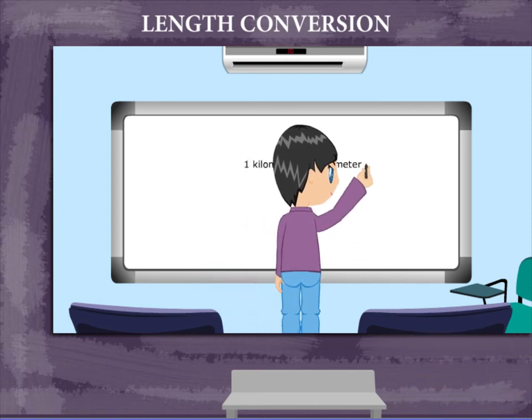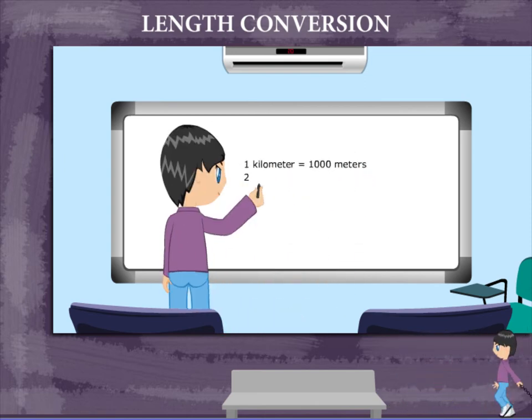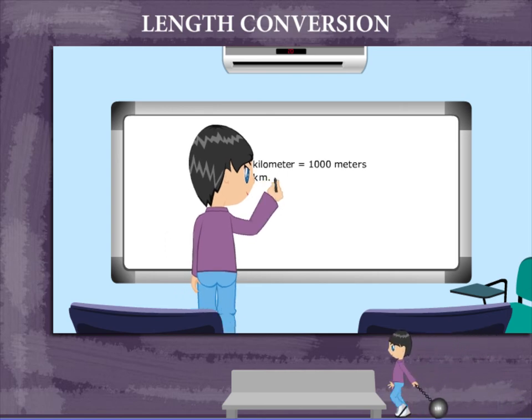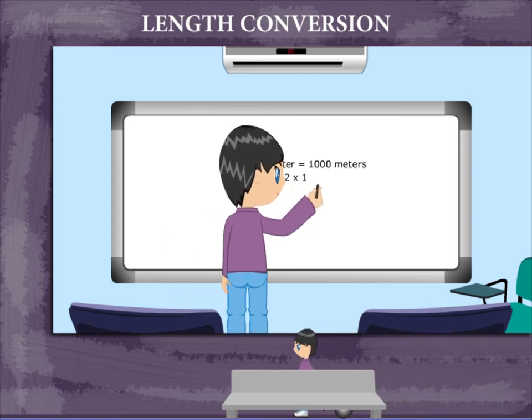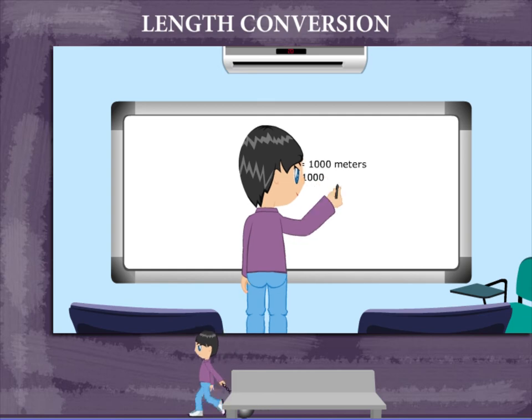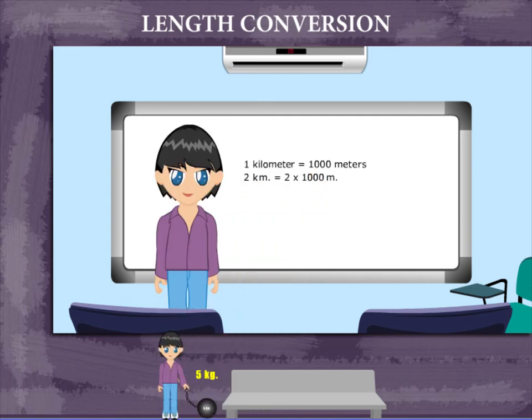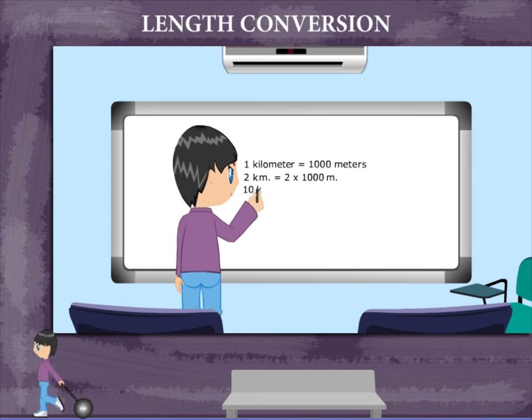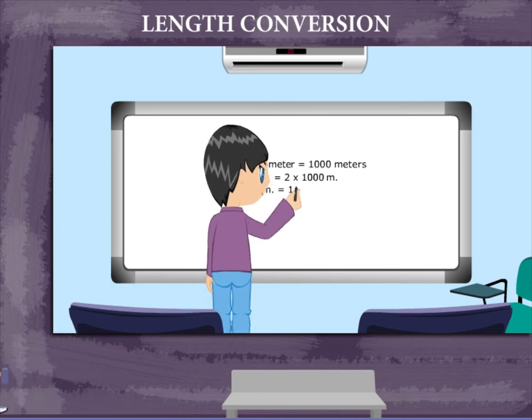Jimmy now tells us about larger units of length. 1 kilometer equals 1000 meters, so 2 kilometers is 2 × 1000 meters or 2000 meters, and 10 kilometers is 10 × 1000 meters or 10,000 meters.